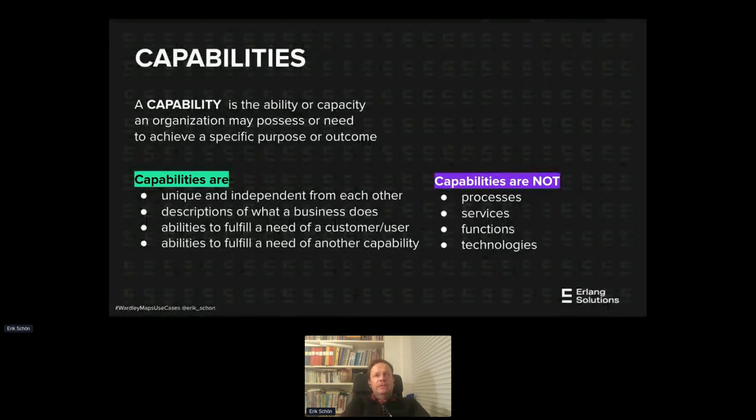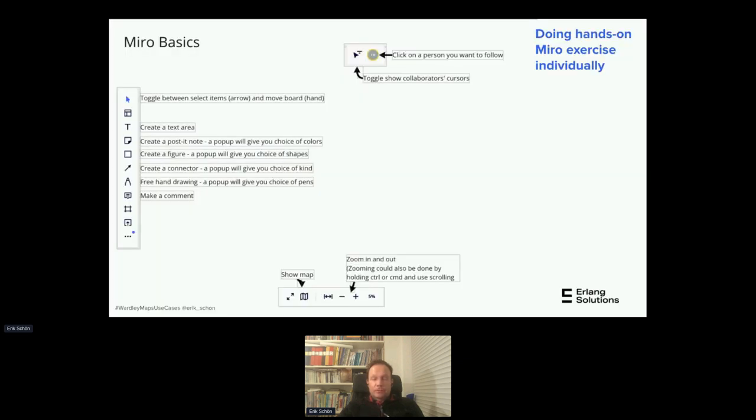This magic thing about capabilities. This was not only about the technology components as such. In order to handle those components depending on the evolution stage, this Big Corp company needed to have the capabilities, meaning abilities or capacities to achieve specific purposes or outcomes that are not processes or services or functions or technologies, but more descriptions of what the business does in terms of abilities. Then going into Miro, we had a short session where people could practice. This was rather smooth, hands-on to get into the tool.